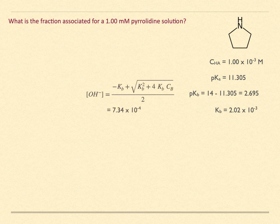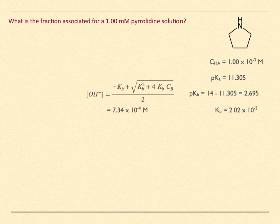Plug the numbers into the quadratic solution, but remember that we are solving for hydroxide ion concentration this time. We find the hydroxide concentration to be 7.34 times 10 to the minus 4 molar.